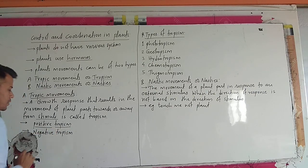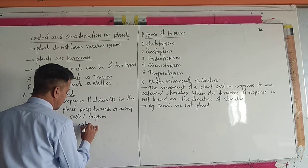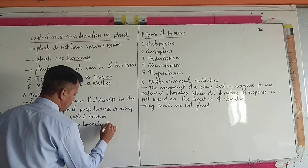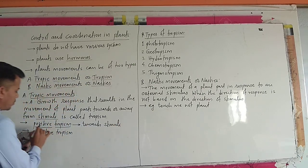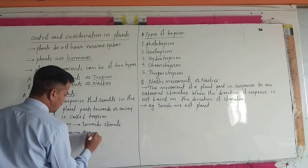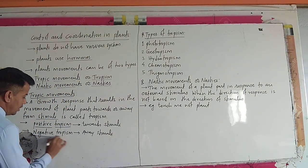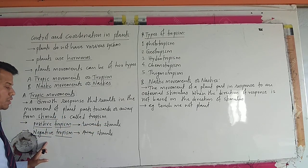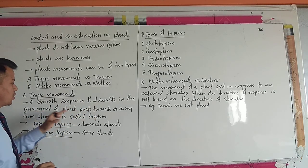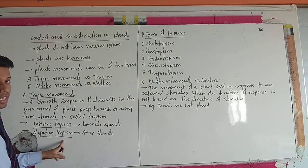Positive tropism means the movement or growth of the plant towards the stimuli. Negative tropism means it is away from the stimuli. So positive means towards stimuli and negative means away from the stimuli.